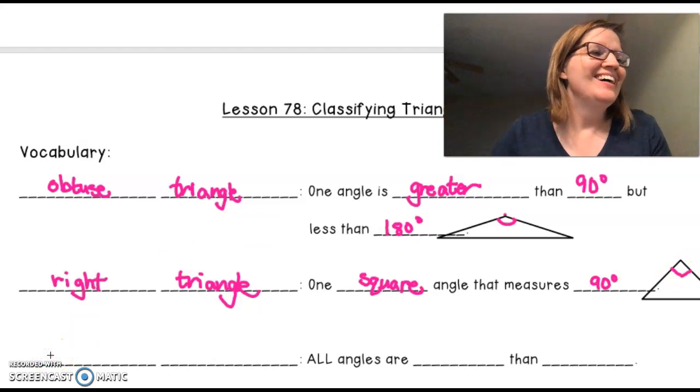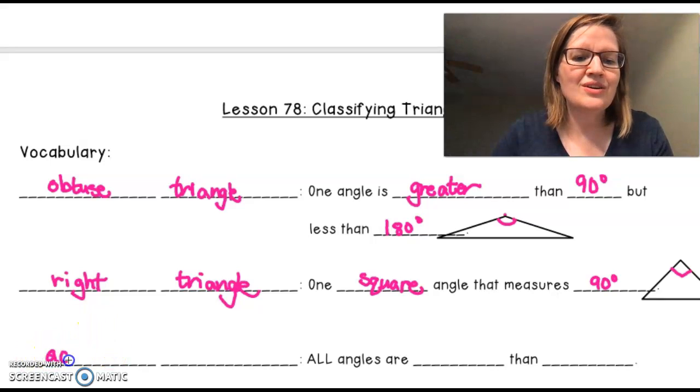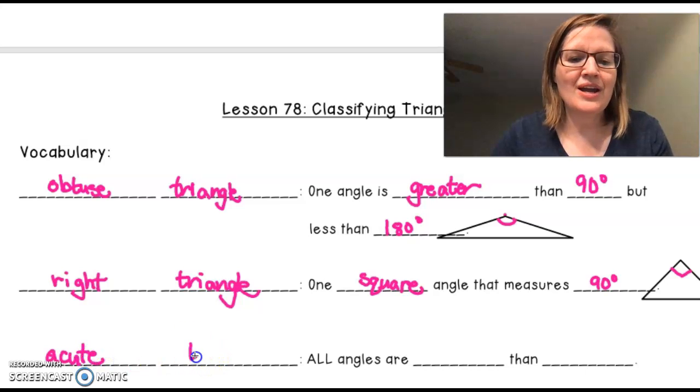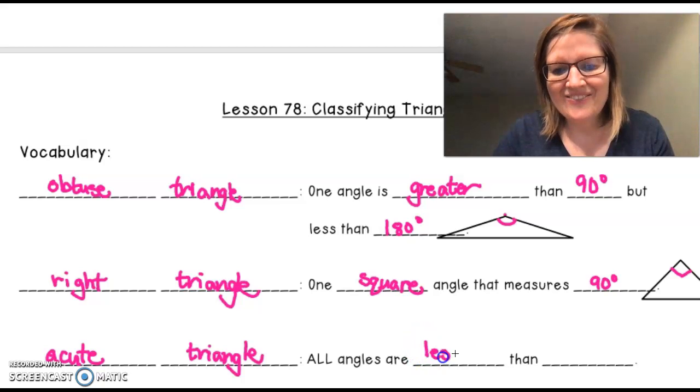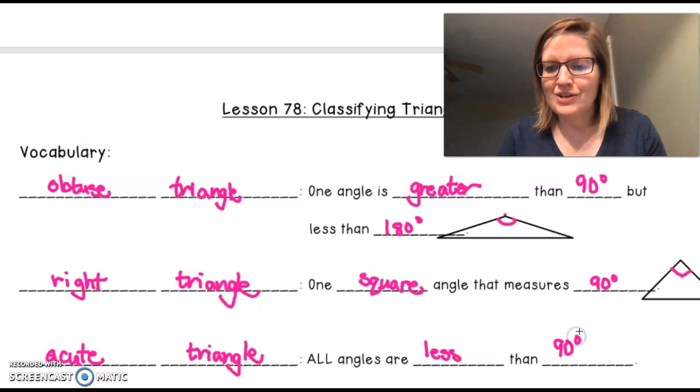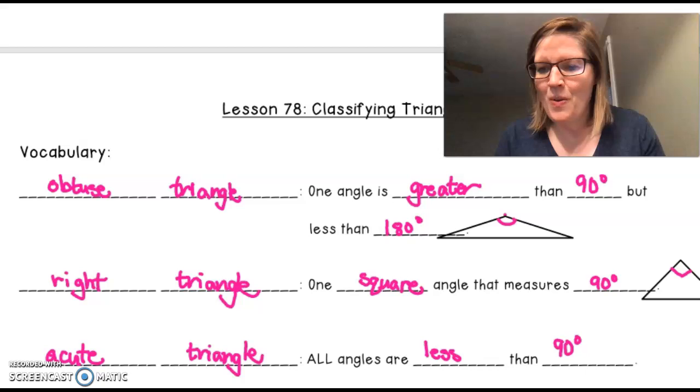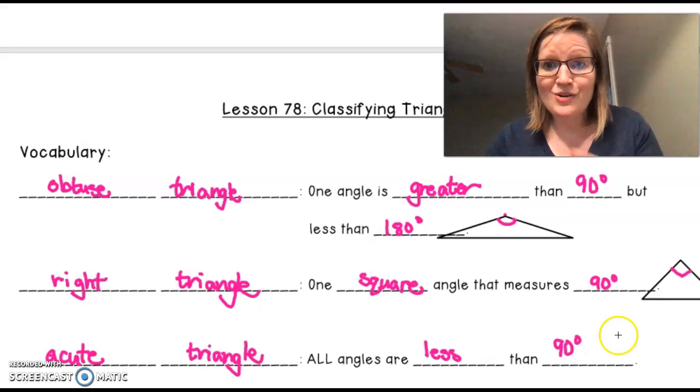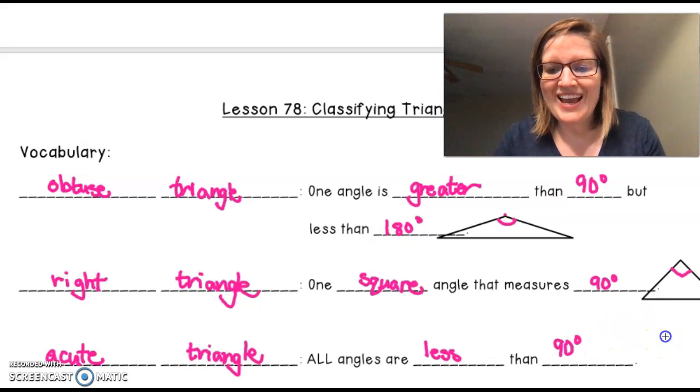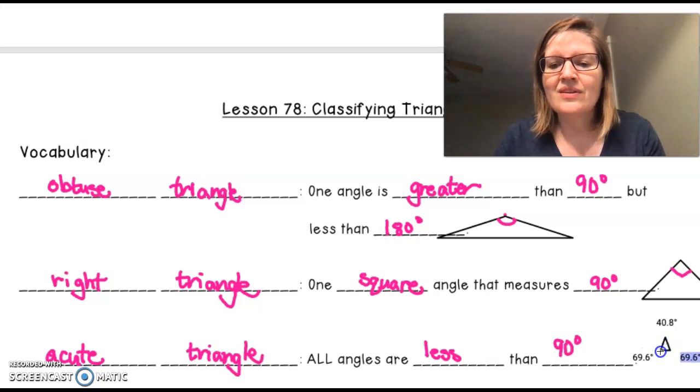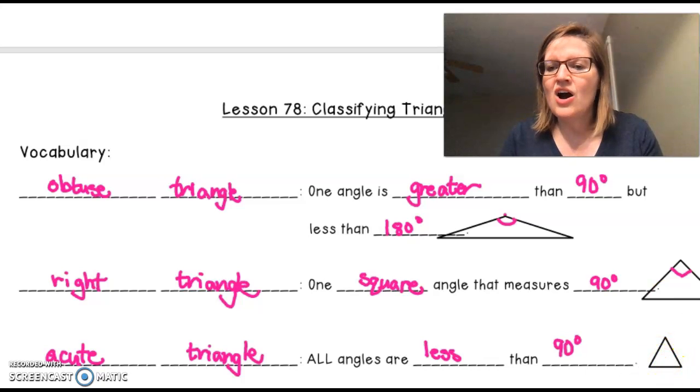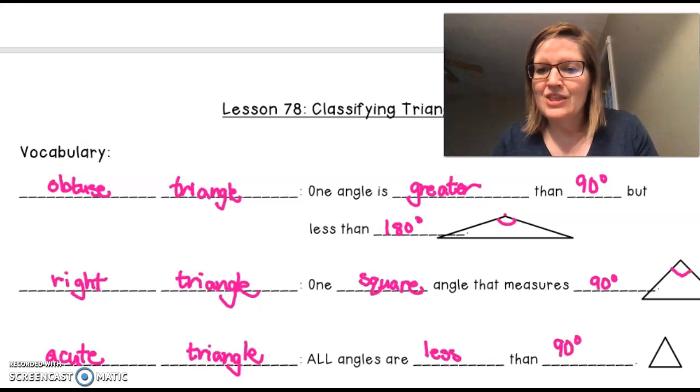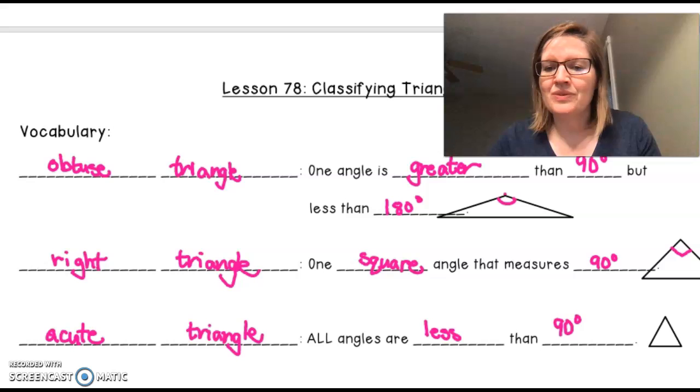Our next triangle is an acute triangle. And as you can tell by the name, all angles are less than 90 degrees. Wish us well as we make an acute triangle. When we're drawing it, it gives you the angle measurement. So helpful. Notice that all of our angles are less than 90 degrees. In fact, they're about 60 degrees right now.